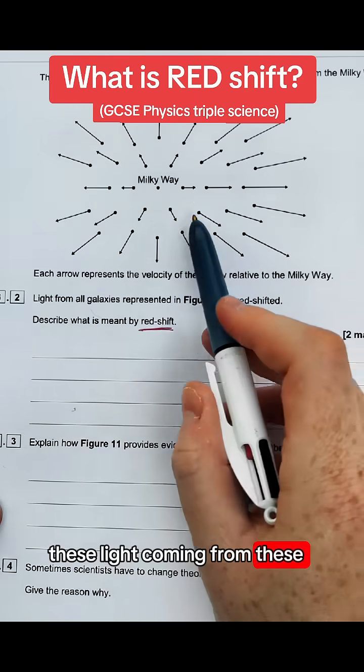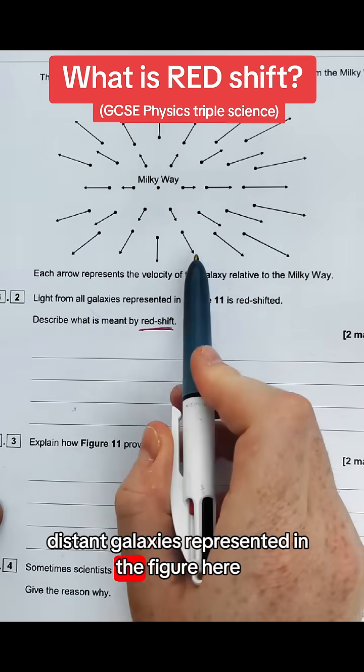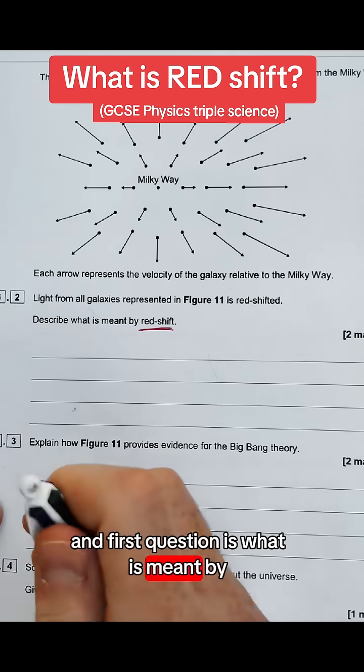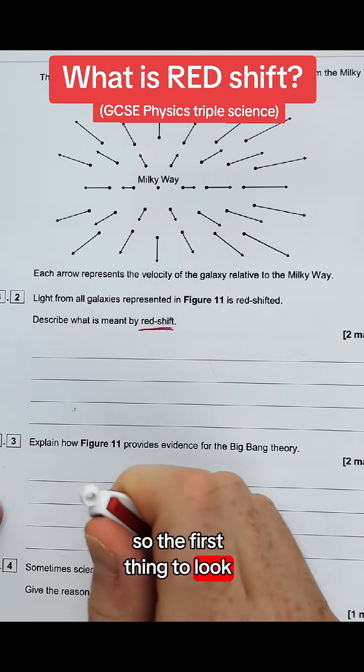The question talks about all these lights coming from distant galaxies represented in the figure here. The first question is what is meant by redshift? So the first thing to look at is what is redshift?